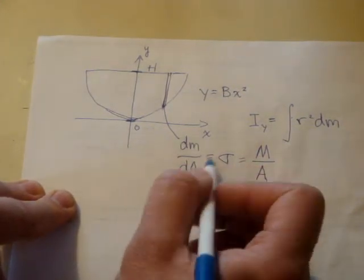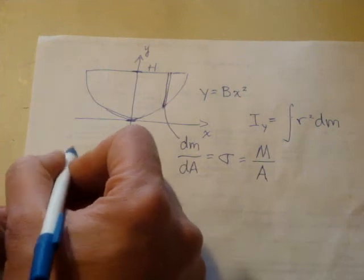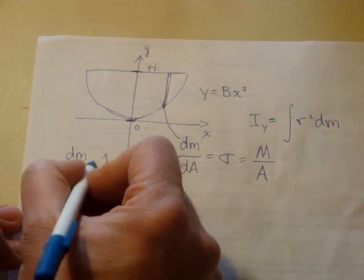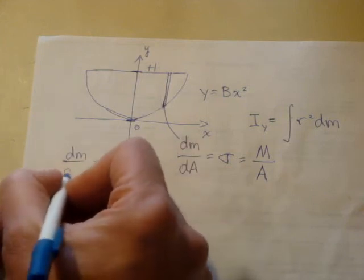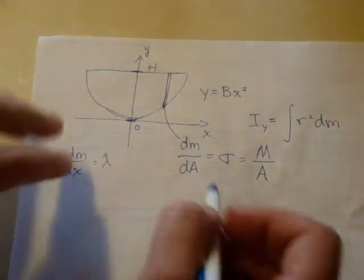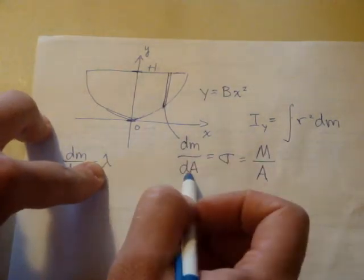So this is different than the problem we did in class. If you recall the problem in class, we associated differential mass with some linear mass density, which we called lambda, and divided dm by just some quantity of dx or dy. So here we're looking at dA.